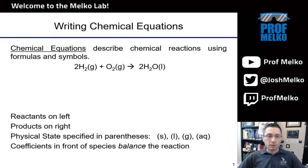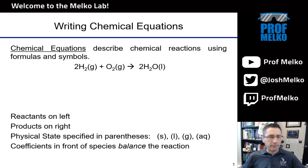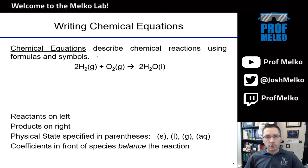Writing chemical equations. Let's start by identifying what reactants and products are and the overall look of a chemical reaction, sometimes called a chemical equation. These describe chemical reactions using their chemical formulas and symbols. This denotes a molecule of hydrogen in the gas phase reacting with a molecule of oxygen in the gas phase. This arrow means it's making or producing the molecule on the right, in this case water.